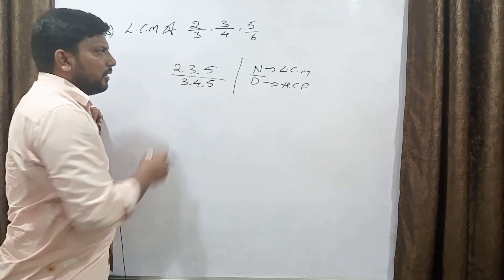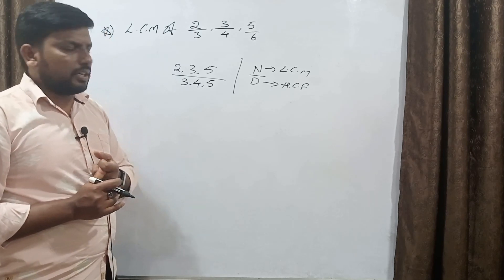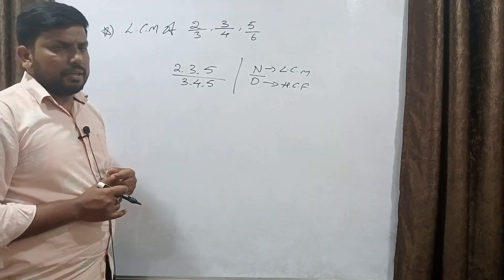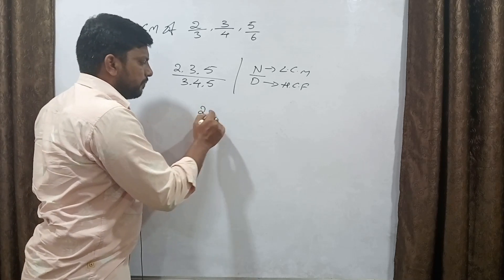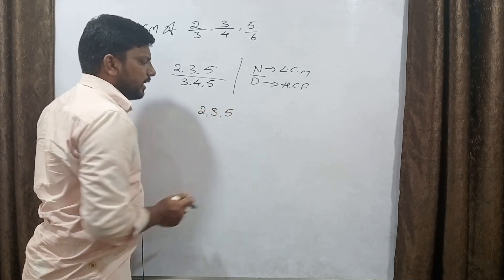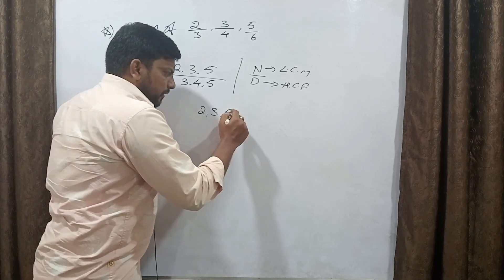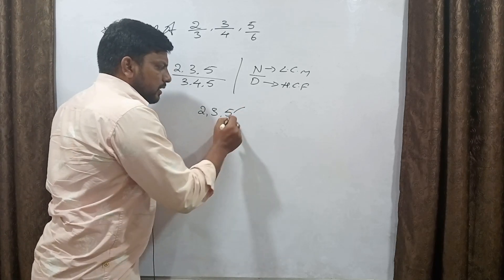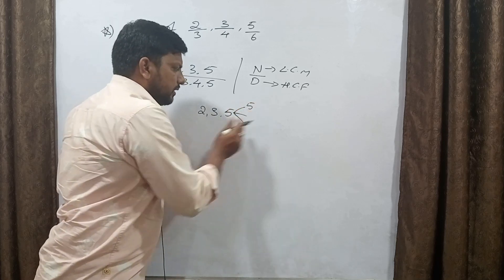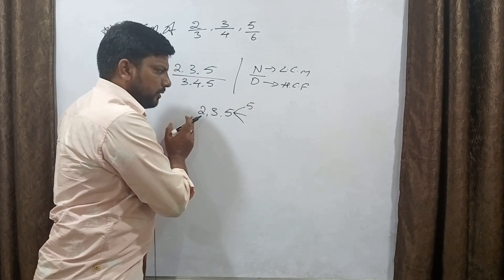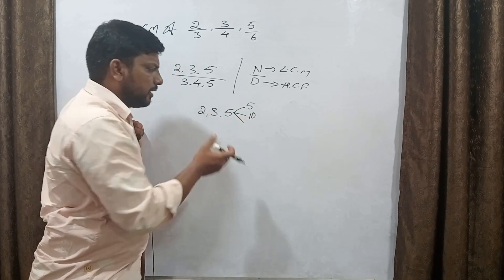We have numerators 2, 3, and 5. We check the LCM of 3 and 5 multiples, as discussed in the previous video. LCM is the highest common multiple. We check multiples of 5: 5, 10, 15, 20, 25, 30...